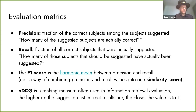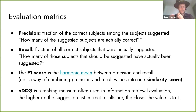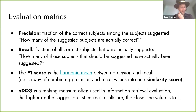When evaluating automated subject indexing algorithms we use common metrics. Precision is the fraction of correct subjects among those suggested by the algorithm. Recall is how many of the subjects that should have been suggested were actually suggested. The F1 score is their harmonic mean, which is often easier to use as a single similarity measure. The NDCG score is a ranking measure often used in evaluating information retrieval systems, and it's a good way of evaluating systems for machine-assisted indexing where the algorithm makes suggestions confirmed or rejected by a human indexer.